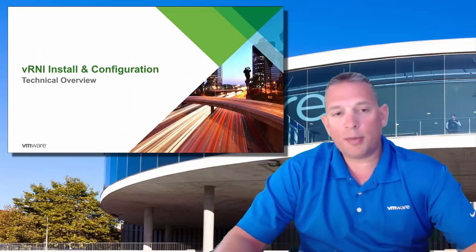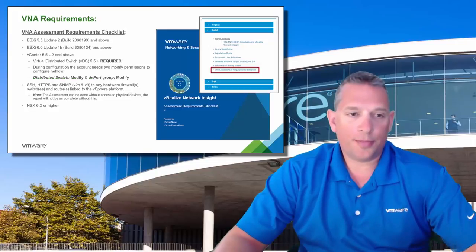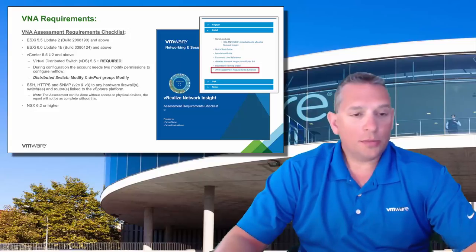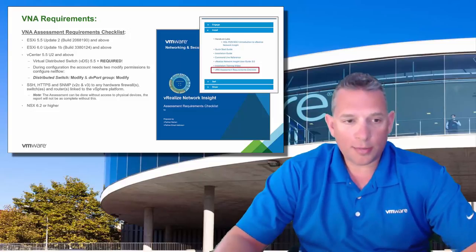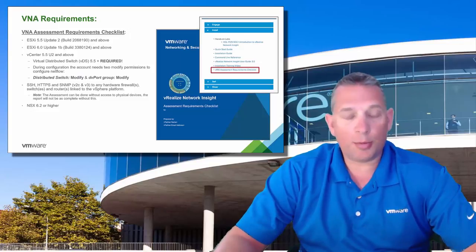For the technical overview of the installation and configuration of VRNI for the virtual network assessment: before getting started, download and review the virtual network assessment requirements checklist from the Partner Central page. The customer needs to be running a minimum of ESXi or vSphere 5.5 Update 2 or higher, vCenter Server 5.5 Update 2 or higher. They must be using virtual distributed switches and must enable NetFlow on it, which requires modifying a couple of permissions.